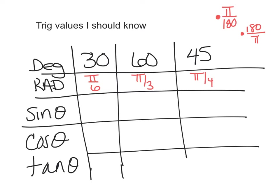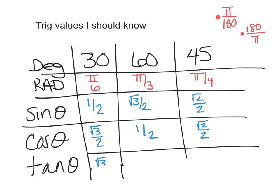To evaluate those, we should have these memorized. We should know that the sine of 30 is 1/2, which is the same as the cosine of 60. The sine of 60 is radical 3 over 2, which is the same as the cosine of 30. Both the sine and cosine of 45 are radical 2 over 2. For tangents: tangent of 30 is radical 3 over 3, tangent of 60 is radical 3, and tangent of 45 is 1.